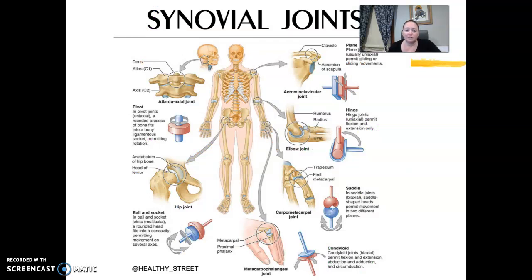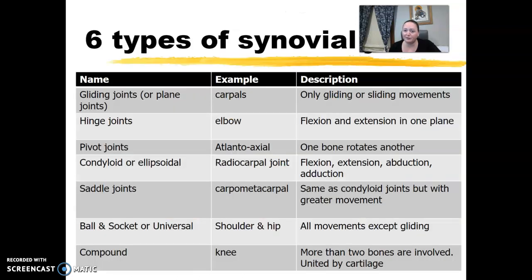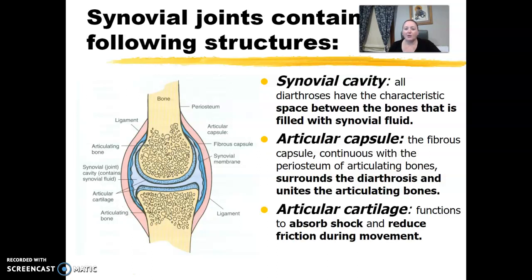Specifically, we're going to focus on the synovial joints and their types, so go back and review those. The six types of synovial joints listed here are: gliding, hinge, pivot, condyloid/ellipsoidal, saddle, ball and socket, and compound — knowing which example is which. Going back to anatomy and physiology basics here.